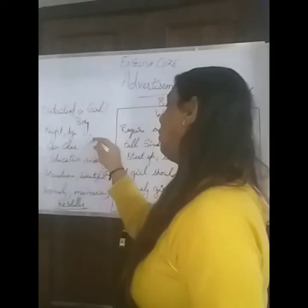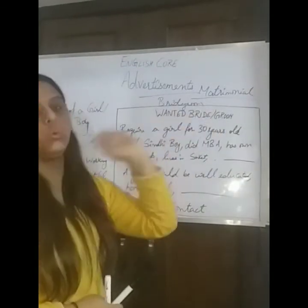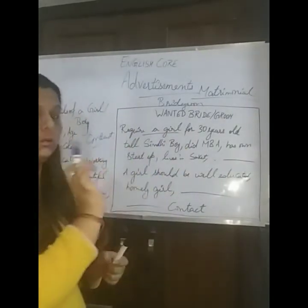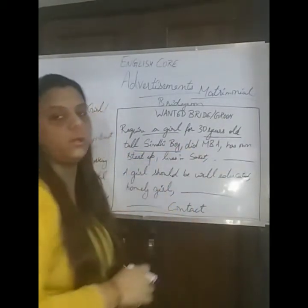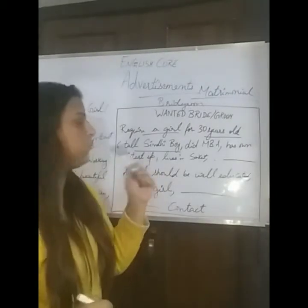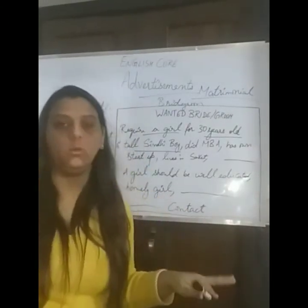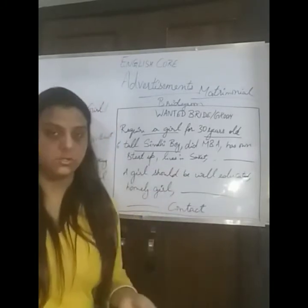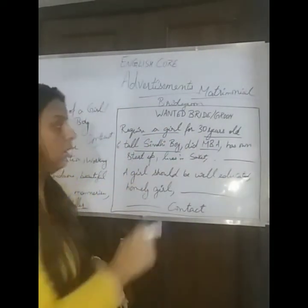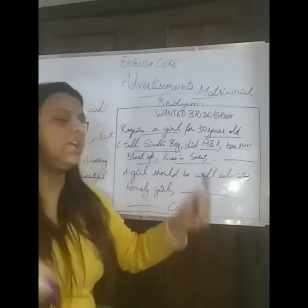See here, there is a box. I have written: 'Wanted Bride/Groom.' For example: 'Require a girl for a 30-year-old, tall Sindhi boy' — I mentioned the age, that the boy is tall, and even the height like 6 feet, and the community or caste, which is also important. You can also specify that inter-caste marriages are acceptable. He did MBA, has his own startup business, lives in Sarkate — I mentioned the place — and is a teetotaller. You can also specify salary.